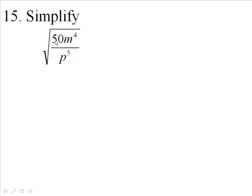Now you see 50 is really 25 times 2, and 25 is a perfect square. m to the 4th is already a perfect square, but the bottom, anything to an odd power is not a perfect square. So I'll make p to the 4th times p on the bottom.